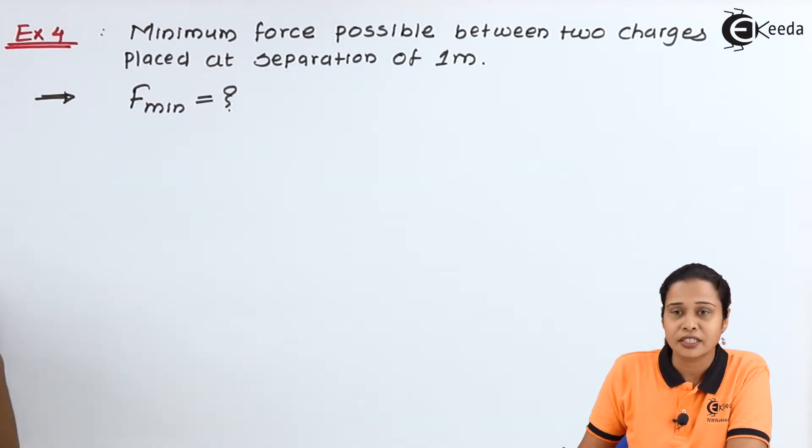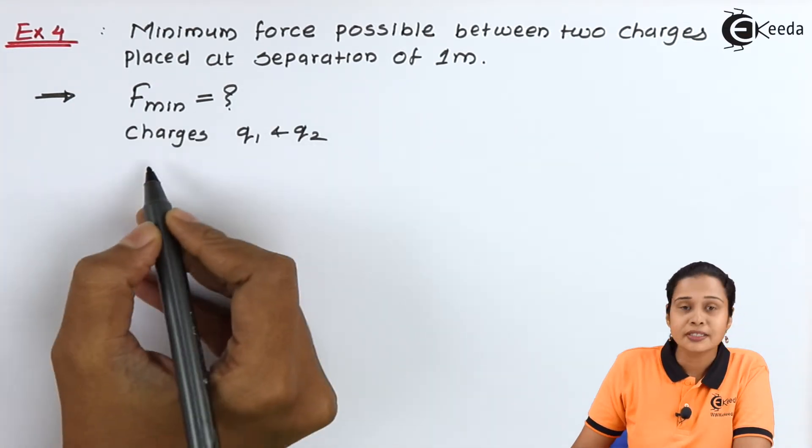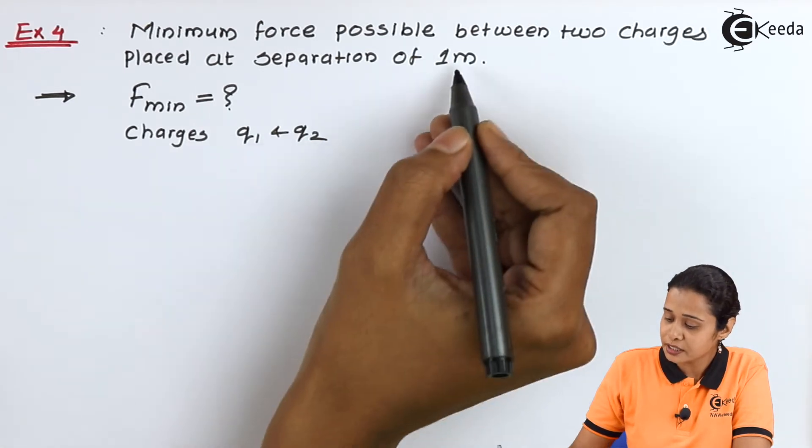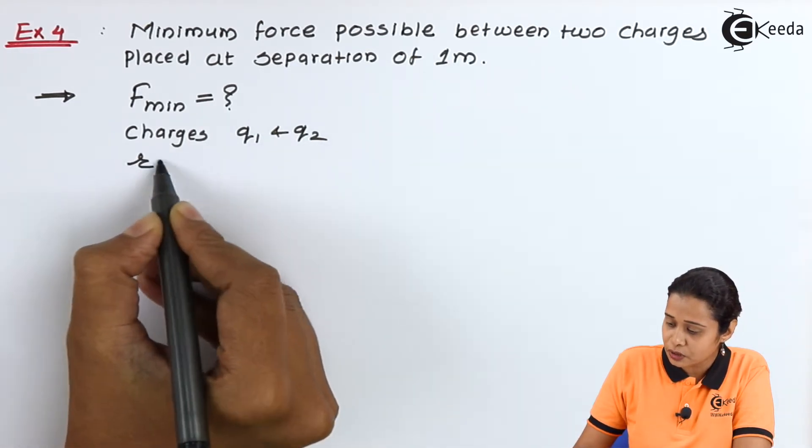We have two charges Q1 and Q2. The separation between these two charges is 1 meter, so R equals 1 meter.